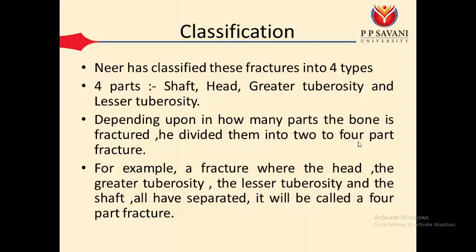Neer has classified this fracture into four types. This classification is mainly done to plan the treatment according to the type of fracture. They have considered four parts located in the proximal humerus: the shaft, the head of the humerus, the greater tuberosity, and the lesser tuberosity. Depending on how many parts are seen on X-ray, it is divided into two-part through four-part fractures. For example, if all four parts are visible, it is called a four-part fracture.